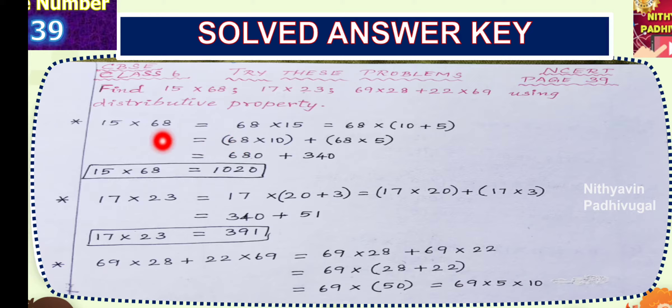68 multiplied by 15 is equal to 68 multiplied by 10 plus 5. Now, it is of the form A into B plus C. This is distribution of multiplication over addition. So, now we have to multiply 68 with 10 first, then 68 with 5, then we have to add both the products. 68 into 10 plus 5 is equal to 68 into 10 plus 68 into 5.